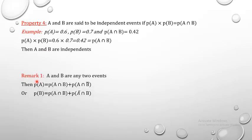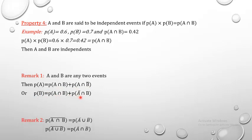Important remarks for solving problems: Remark 1 — for any two events A and B: P(A) = P(A∩B) + P(A∩B̄), and similarly P(B) = P(A∩B) + P(Ā∩B). Also, P(A∪B) bar = P(Ā∩B̄) by De Morgan's law.